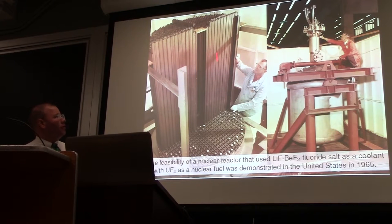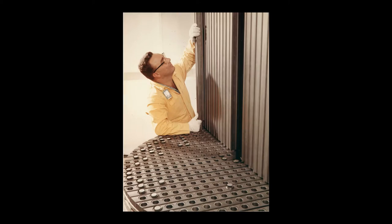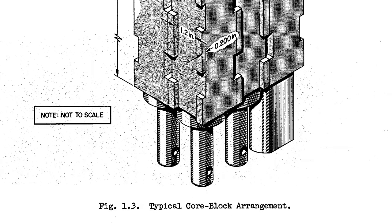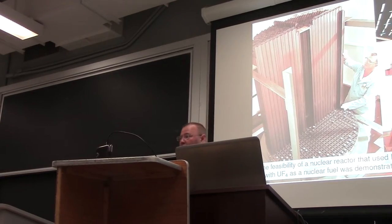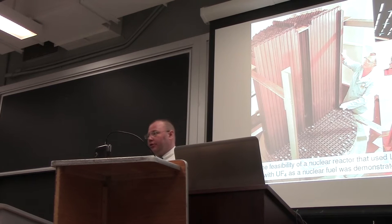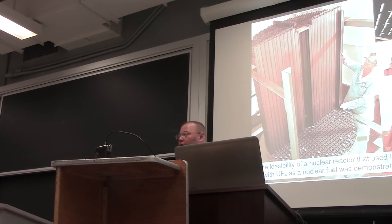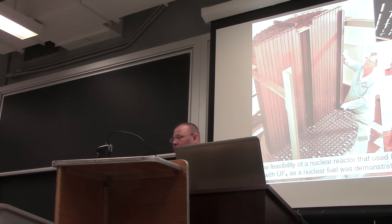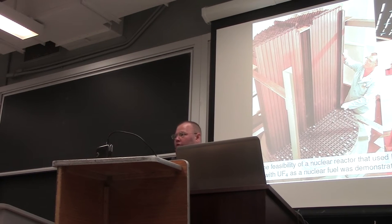You nuclear engineers are probably going to think those are fuel rods. They're not — they're graphite. The fuel was liquid that flowed through channels in this graphite. So the graphite served the function that water serves in an existing solid-fueled reactor, which is to moderate the neutrons that are being born in fission. Except this time, instead of having solid fuel and a liquid moderator, you've got liquid fuel and a solid moderator.